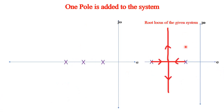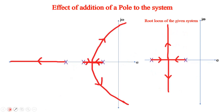This is the root locus of the given system shown in the previous slide. Now I have added one pole. Since I have added a pole, whenever you have two poles and you take any test point in between, to the right you have only one pole - nothing else - so this is a root locus segment. Similarly, for the other pole, to the left there are three poles, so this is also a root locus segment.